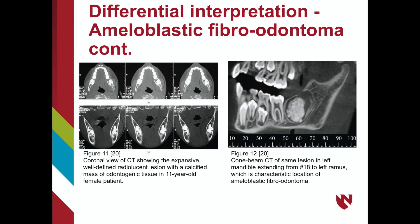Continuing, axial and coronal CT scans show an 11-year-old female patient presenting with ameloblastic fibroadontoma as seen in Figure 11, showing a well-defined radiolucent lesion with a calcified mass of odontogenic tissue. Figure 12 shows a cone-beam CT scan of the same lesion with the characteristic location of ameloblastic fibroadontoma in the posterior mandible.